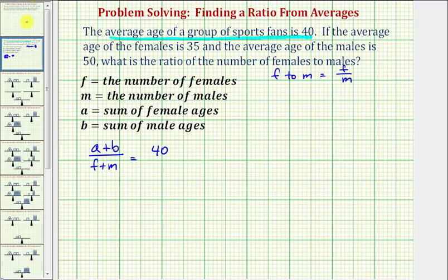Next, we're told the average age of the females is 35, which means the sum of the female ages, which is a, divided by the number of females, which is f, must equal 35.